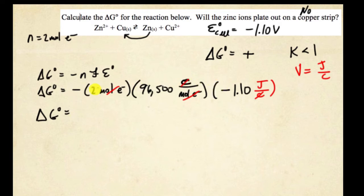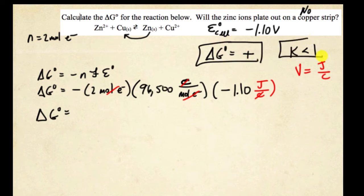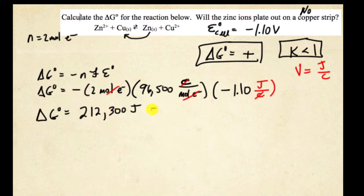Negative times a negative — don't forget to put those negatives in, it can throw off the whole problem. You already know going into this problem that the result should be positive, so it should all correlate together. The answer comes out to positive 212,300 joules, which you can convert to 212.3 kilojoules if you want. It's positive, so therefore it's not thermodynamically favorable — it's favoring the reactants, not the products.